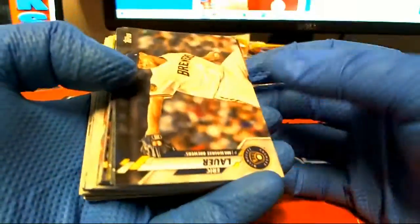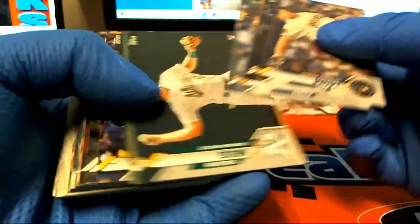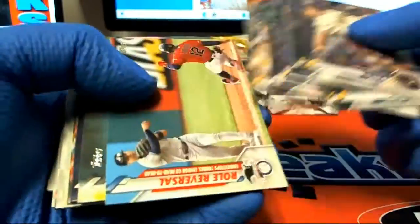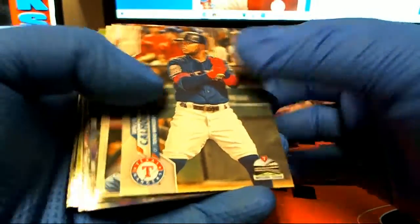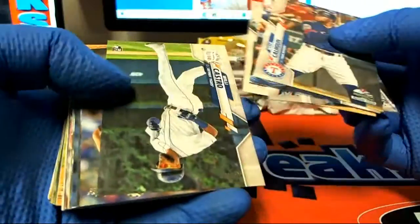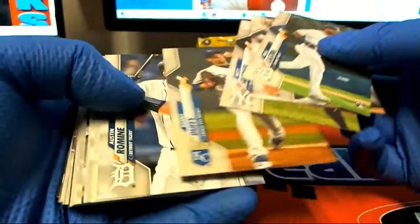Eric Lauer. Eric Lauer nice. Calhoun. Cashro, we saw a couple of his autos in Topps Chrome.